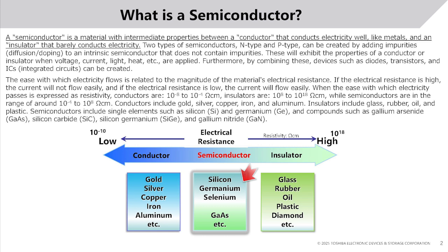Semiconductors include single elements such as silicon and germanium, and compounds such as gallium arsenide, silicon carbide, silicon germanium, and gallium nitride.